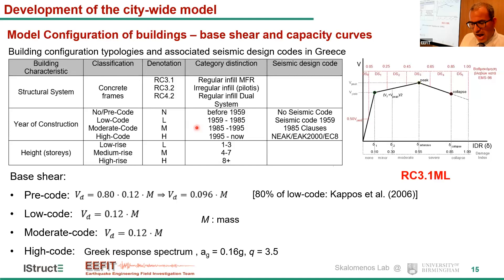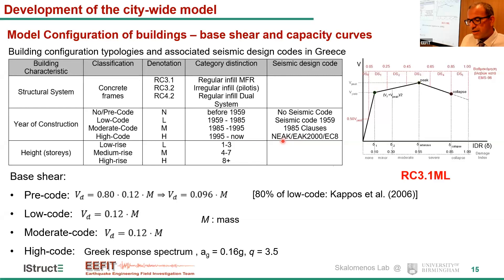Finally, from 1995 to the present, we have high-code buildings following the classical response spectrum analysis approach. There are three periods: NEAC 1995–2000, EAC (the Greek code) 2000–2008, and Eurocode introduced to Greece in 2008. Basically, response spectrum analysis with a behavior factor q equal to 3.5 is applied for these buildings.